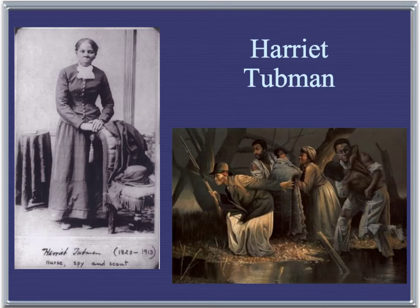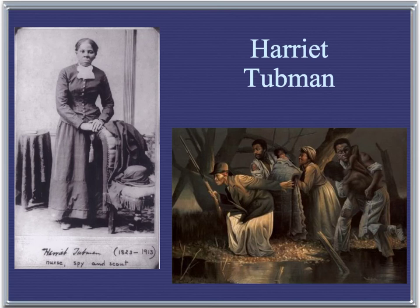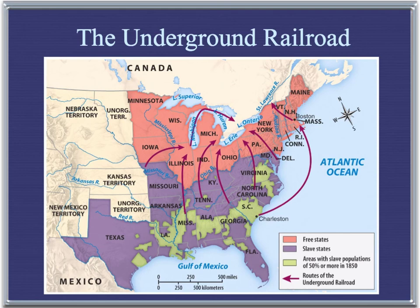Whereas Frederick Douglass was probably the most prominent free African-American drumming up support for anti-slavery ideals in the North, Harriet Tubman was probably one of the most daring former slaves. It is said that she helped lead over 300 slaves to freedom, many of them younger men willing to take the risk, though women and children were among them as well. There was reportedly a $40,000 bounty placed on Tubman by Southerners because she led so many slaves to freedom along the fabled Underground Railroad.